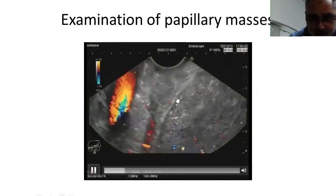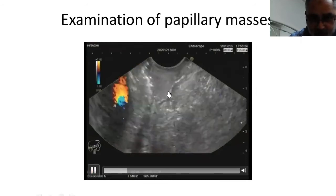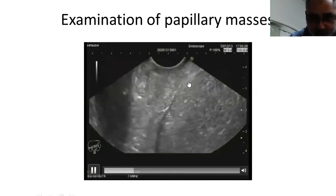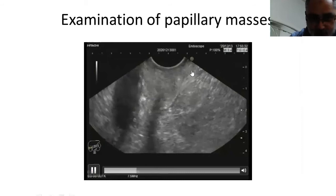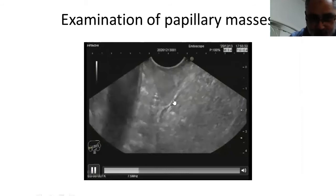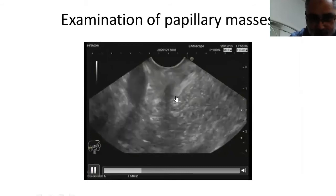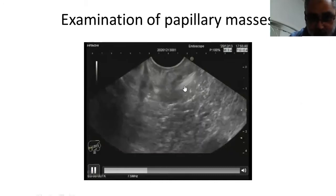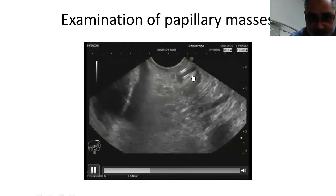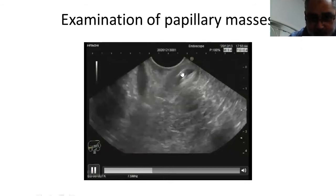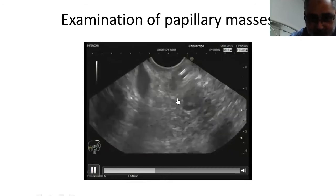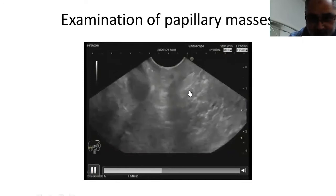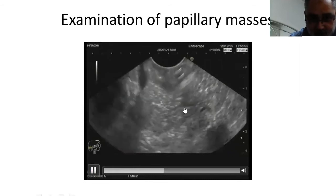Gentle minimal clockwise rotation will visualize the papilla while floating inside the lumen of the second part of the duodenum, while gradual counterclockwise rotation — this is the muscularis propria — will visualize very nicely the muscularis propria, and this is a small papillary mass. More counterclockwise rotation will visualize the common bile duct with a plastic stent inside and the pancreatic duct. This is a double duct sign and part of the region of the pancreatic head.